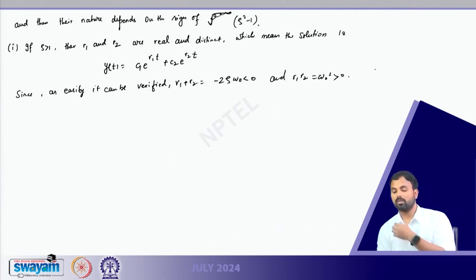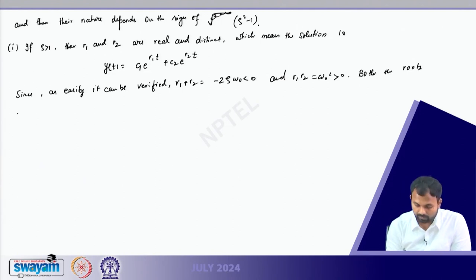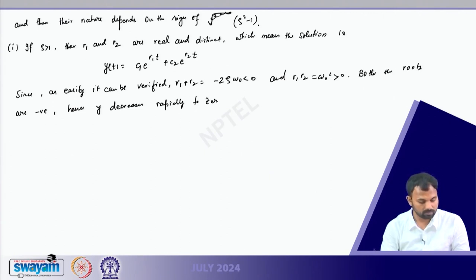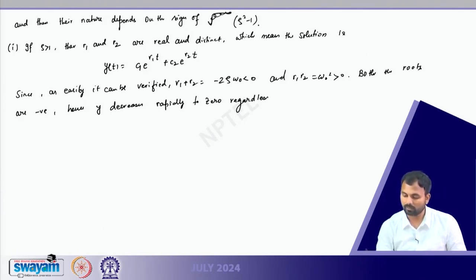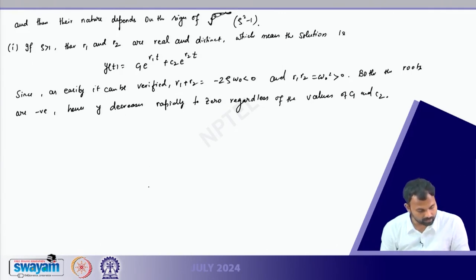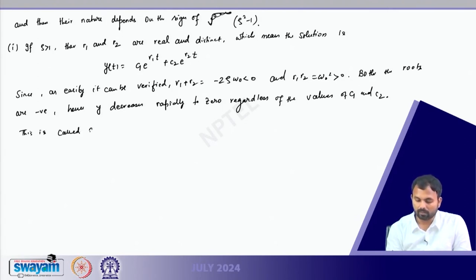If zeta is greater than 1, then R_1 and R_2 are real and distinct. The general solution is y(t) = c_1 e^(R_1 t) + c_2 e^(R_2 t). It can easily be verified that R_1 plus R_2 equals -2 zeta omega_0, which is less than 0, and R_1 times R_2 equals omega_0 squared, which is positive. By quadratic equation rules, both roots are negative, so y decreases rapidly to 0 regardless of the values of c_1 and c_2. This is called over-damping.